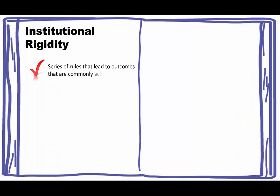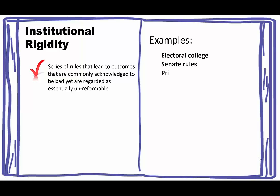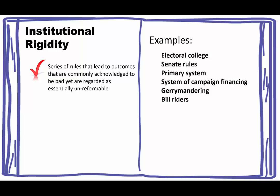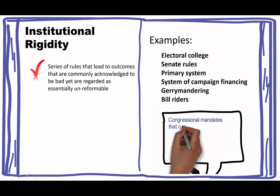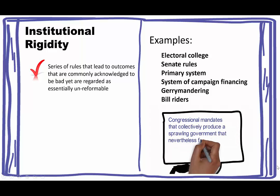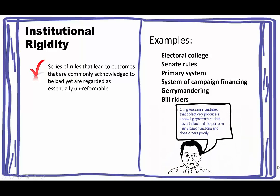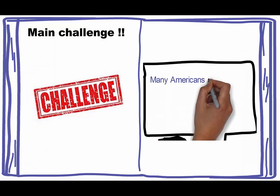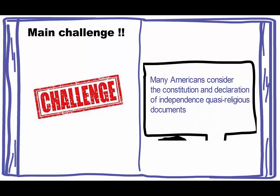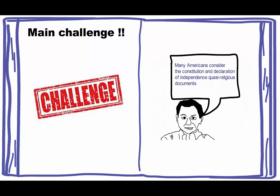Institutional rigidity is where there's a series of rules that lead to outcomes commonly acknowledged to be bad, yet are regarded as essentially unreformable. Examples include the Electoral College, Senate rules, the primary system, the system of campaign financing, gerrymandering, and bill riders. Fukuyama also talks about congressional mandates that collectively produce a sprawling government that fails to perform many basic functions and does others poorly. The main challenge is that many Americans consider the Constitution and Declaration of Independence quasi-religious documents, making these things very hard to change.